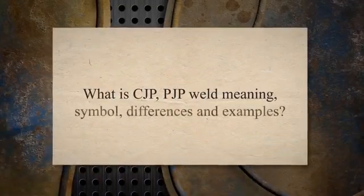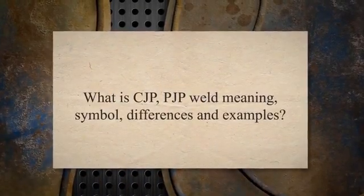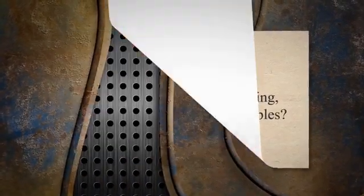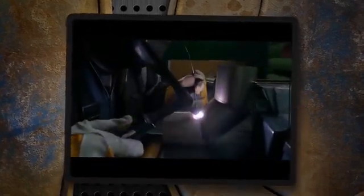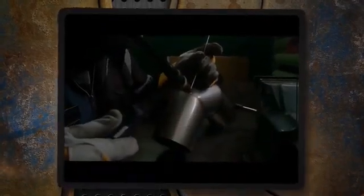What is CJP and PJP weld — meaning, symbol, differences, and examples. CJP and PJP welding joints are defined in AWS D1.1, D1.5, and CSA W59 welding codes and are applicable for structural welding only.